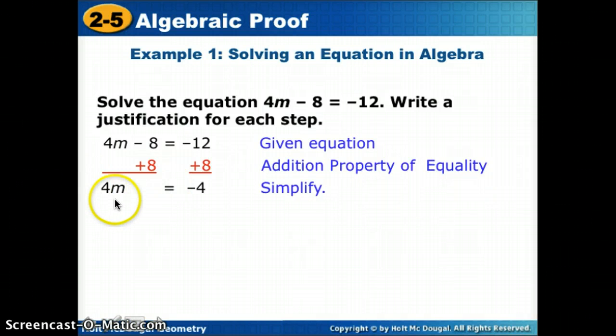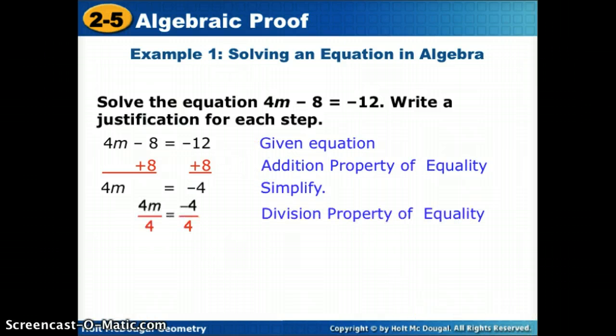Now if I think what do I want to do to the 4M to get M by itself, well right now it says 4 times M, so I'm going to do the opposite. I'm going to divide using the division property of equality to divide both sides by 4. We're going to simplify again, so our 4's cross out and 4 divided by 4 gives us 1, a negative divided by a positive gives us a negative. So it's just like we've done before solving an equation, but now we're going to justify each step that we're doing.